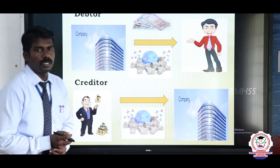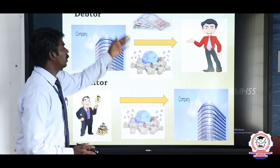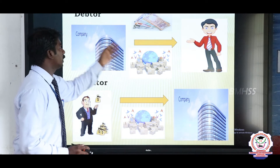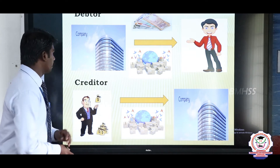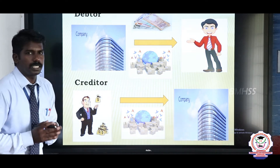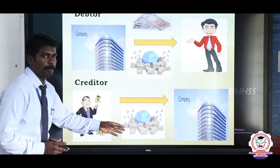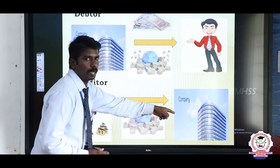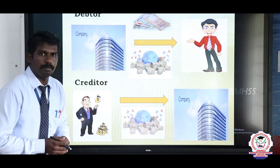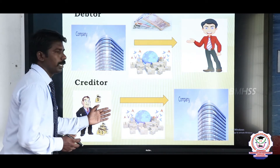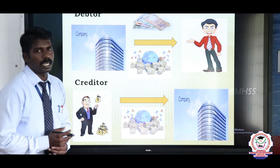Debtor: A debtor is a person who receives goods, services, or cash from the company on the basis of credit — it is called a debtor. Creditor: A creditor is a person who gives money or supplies goods and services to the company on the basis of credit. After a certain period, the creditor receives the money for the goods and services already supplied to the company.